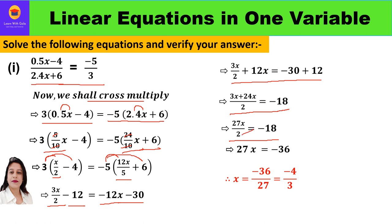So 27x/2 equals minus 18. Cross multiplying, 27x equals minus 36. Therefore x equals minus 36/27, which simplifies by dividing by 9 to give x equals minus 4/3.